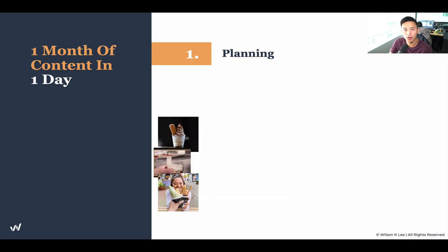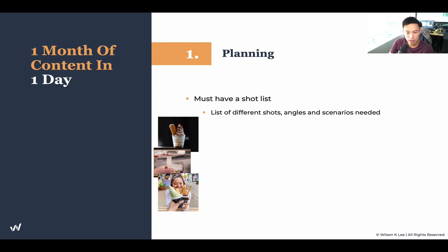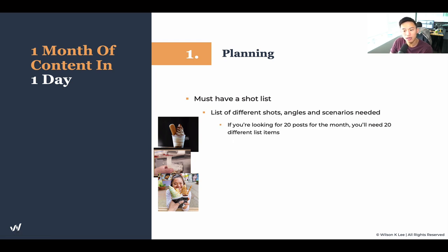Now that you have your mood board, it is time to have a shot list. What is a shot list? A shot list is basically a list of different shots, angles, and scenarios that you need. For example, when you see this cup, that becomes your shot list. When you see this ice cream swirling in the making, that becomes a shot on your shot list. A compilation of, say, 20 of these shots identifying the specific angles and the reason for each shot, so you can follow it step by step during the shoot. If you're looking for 20 posts for a month, you'll need 20 different items listed.